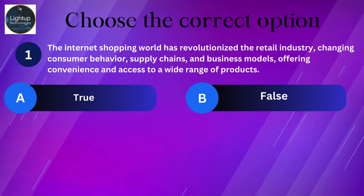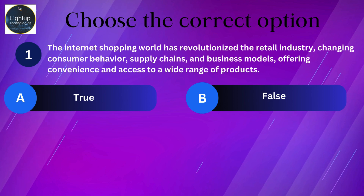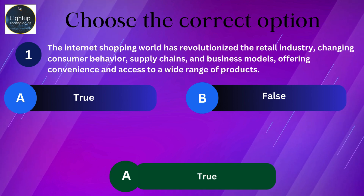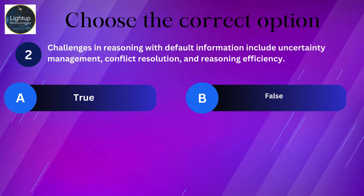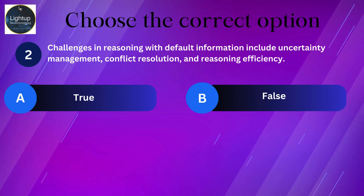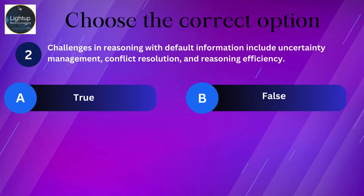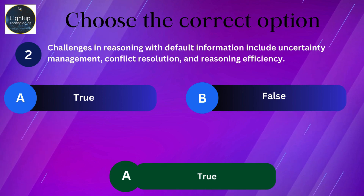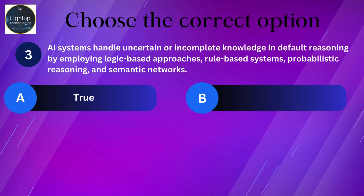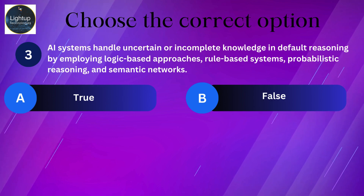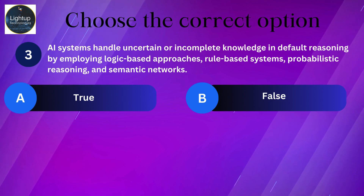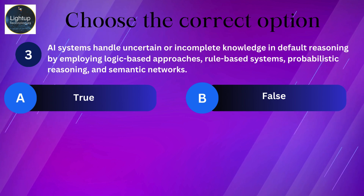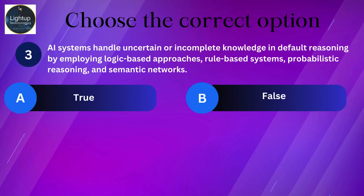Challenges in reasoning with default information include uncertainty management, conflict resolution, and reasoning efficiency. AI systems handle uncertain or incomplete knowledge in default reasoning by employing logic-based approaches, rule-based systems, probabilistic reasoning, and semantic networks.